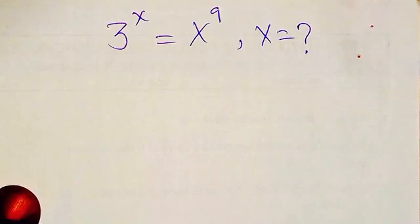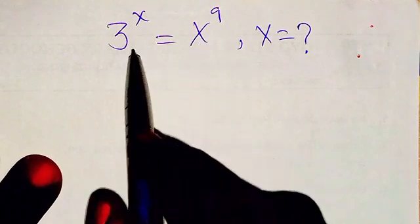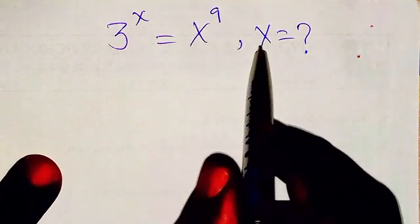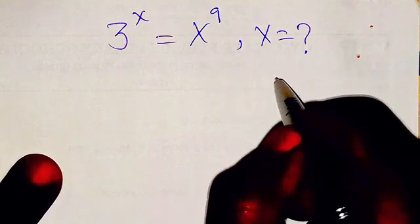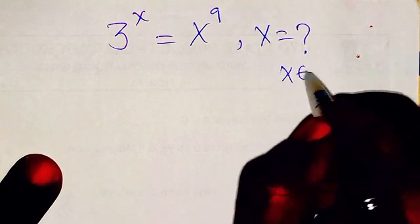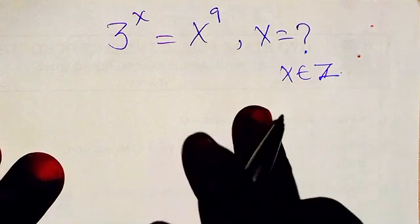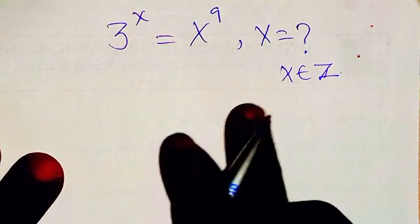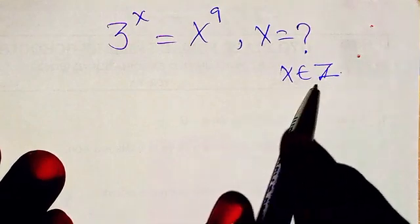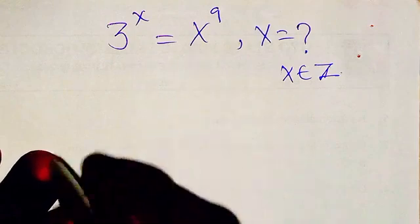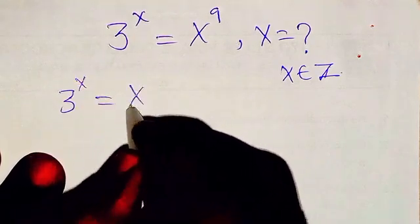Hello, good viewers, you are welcome. Let's see how we are going to solve this problem: x, 3 to power x equals x to power 9. We want to know the value of x when x belongs to the set of integers. We could have other forms of solution, but here we will be considering when x belongs to the set of integers. So we have 3 to power x equals x to power 9.